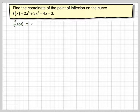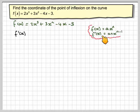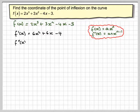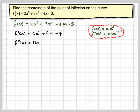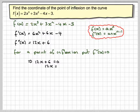So how do we do it algebraically? We've got f(x) = 2x³ + 3x² − 4x − 3. We're going to differentiate the curve. Remember: if f(x) = ax^n, then f'(x) = anx^(n−1). So differentiating gives f'(x) = 6x² + 6x − 4. Then we differentiate again to find the second derivative. We find the point of inflection by setting the second derivative equal to 0. So f''(x) = 12x + 6.